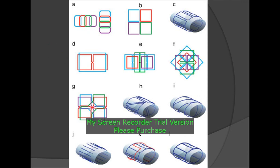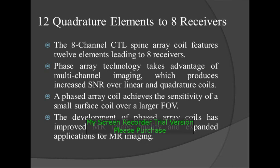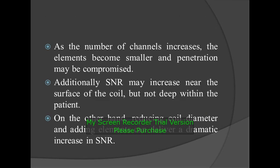These are some of the configurations for the volume coil: linear coil, rectangular, circular, and overlapped. The 8-channel CTL spine array coil features 12 elements leading to 8 receivers. Phased array technology takes advantage of multi-channel imaging, which produces increased SNR over linear and quadrature coils. A phased array coil achieves the sensitivity of a small surface coil over a larger field of view. As the number of channels increases, the elements become smaller and penetration may be compromised. Additionally, SNR may increase near the surface of the coil but not deep within the patient. On the other hand, reducing coil diameter and adding elements can deliver a dramatic increase in SNR.